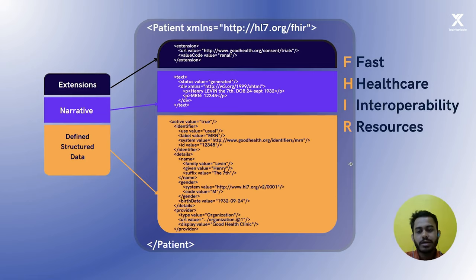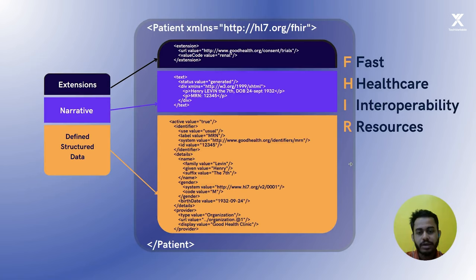The narrative part holds the summary information. For example, it contains the patient name, date of birth, and patient ID. It can be displayed in HTML as well. The next part is the defined data structure, which is very well defined. It contains most of the information about the resource — in this patient resource, it contains the patient name, patient ID, date of birth, gender, and organization.